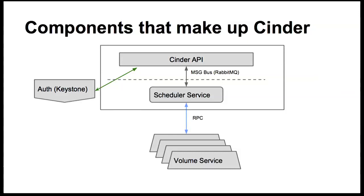For those not familiar, Cinder is made up of several components that will look familiar if you know OpenStack. At the top level there's an API — all requests come in, whether through the Python Cinder client, the Horizon dashboard, or curl requests. Those requests go onto the message bus, with RabbitMQ as the default. They get picked up by the scheduler service, which sends an RPC call to one of the volume services. We now have a pool of resources with multiple back-end devices, and the scheduler figures out where to route the call to get it to the right device.